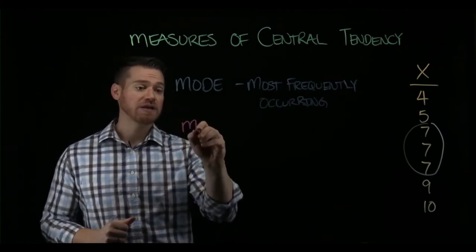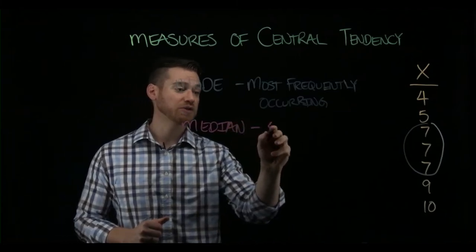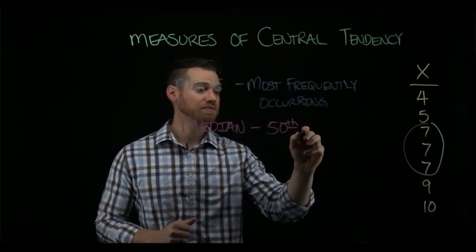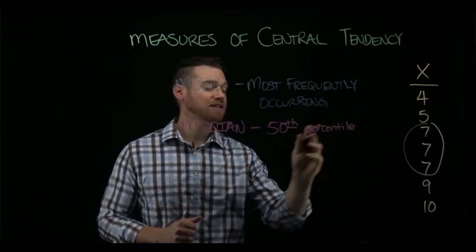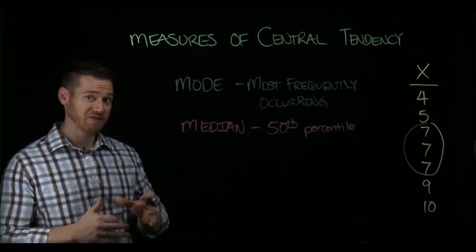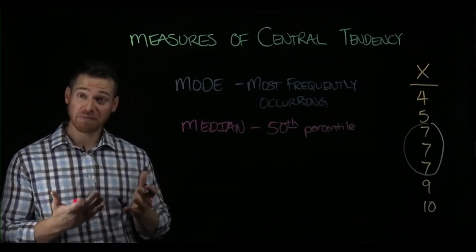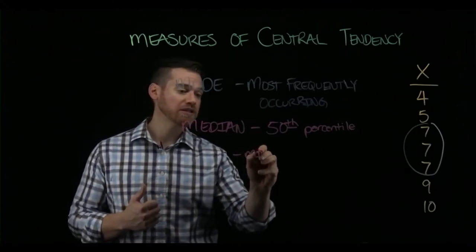The next measure of central tendency we'll talk about is the median. The median is concerned with the location of scores in a distribution. The median is the value at the 50th percentile, and so essentially what that means is it divides the scores into even halves. We can find the median by finding the data's midpoint or the median location.